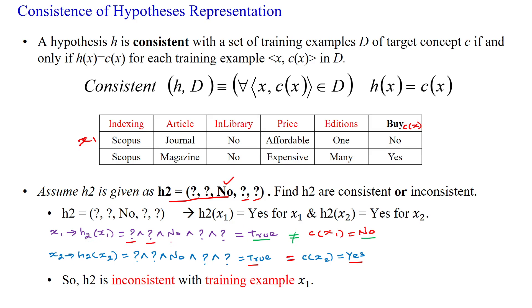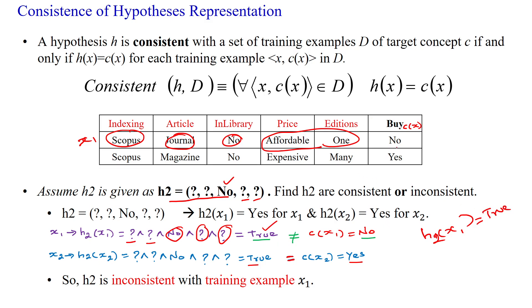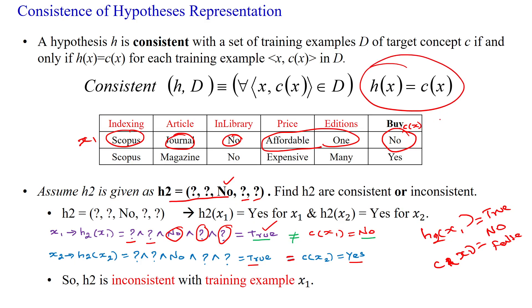H2 of X1: question symbol accepting any value, question symbol accepting any value, then it is no accepting any value, and question symbol accepting any value, and also question symbol accepting any value. So H2 of X1 is giving true. But here C of X1 is no, meaning false. So both are not equal. With respect to training example X1, the given hypothesis H2 is inconsistent.